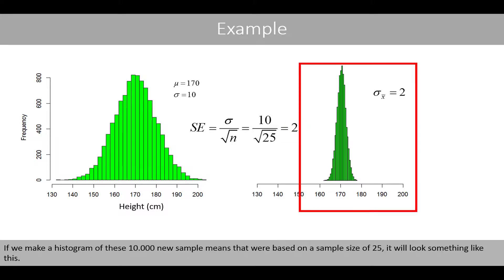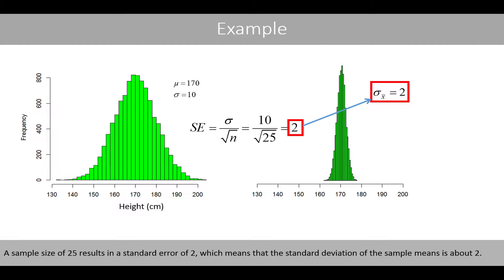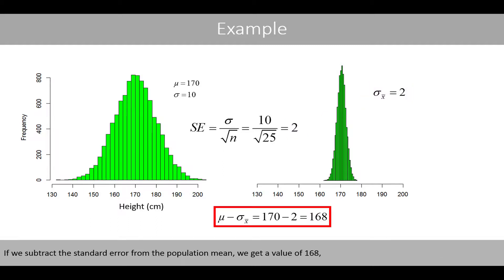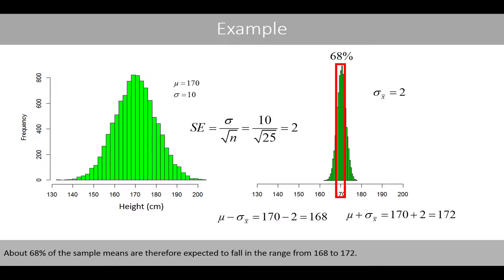If we make a histogram of these 10,000 new sample means that were based on a sample size of 25, it would look something like this. Note that the spread of the sample means has now been reduced, because most sample means are now much closer to the true population mean, as a sample size of 25 results in a standard error of 2, which means that the standard deviation of the sample means is about 2. If we subtract the standard error from the population mean, we get a value of 168, and if we add the standard error to the population mean, we get a value of 172. About 68% of the sample means are therefore expected to fall in the range from 168 to 172.